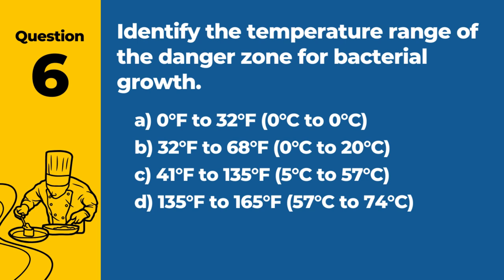Question 6. Identify the temperature range of the danger zone for bacterial growth. The answer is C: 41°F to 135°F (5°C to 57°C). This range is where bacteria can grow rapidly, increasing the risk of foodborne illness.